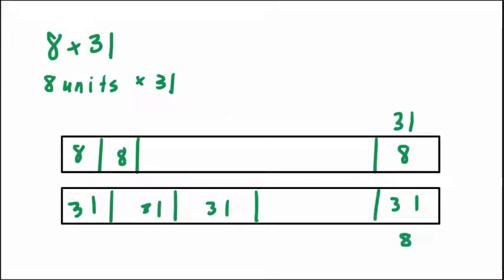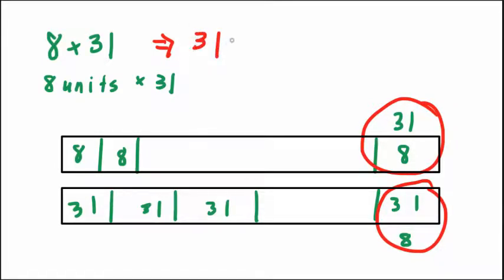Now what the commutative property says is, commutative property says it does not matter, right? Are these answers going to be different? No, they're the same thing. So it doesn't matter what we put first. That's the commutative property. It says it doesn't matter what we put first.